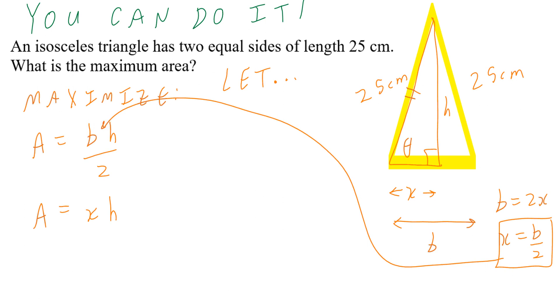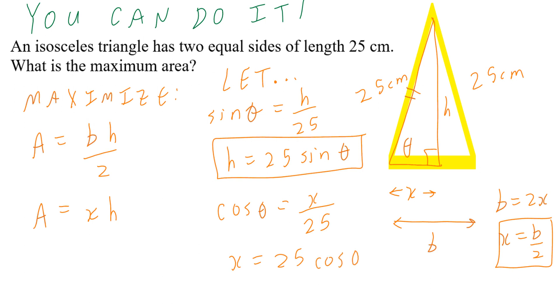So sine theta equals h divided by 25. Let's write this down. Sine theta equals h divided by 25. Or if you isolate for height, that's going to be 25 times sine theta. If you look at the adjacent over hypotenuse, that's going to be cosine. So cosine theta is x divided by 25, which means x is 25 times cosine theta.